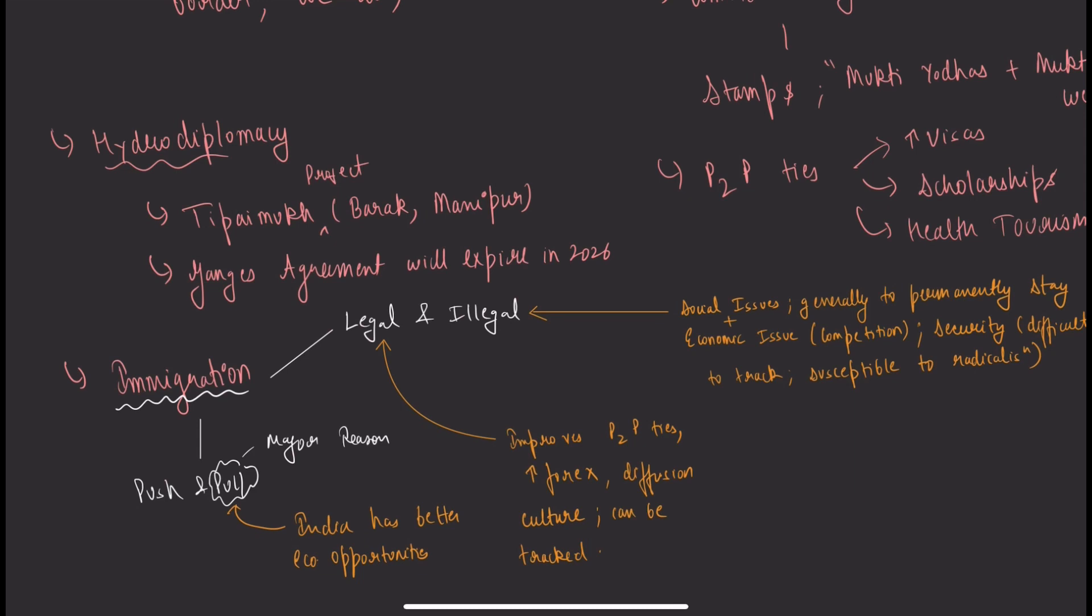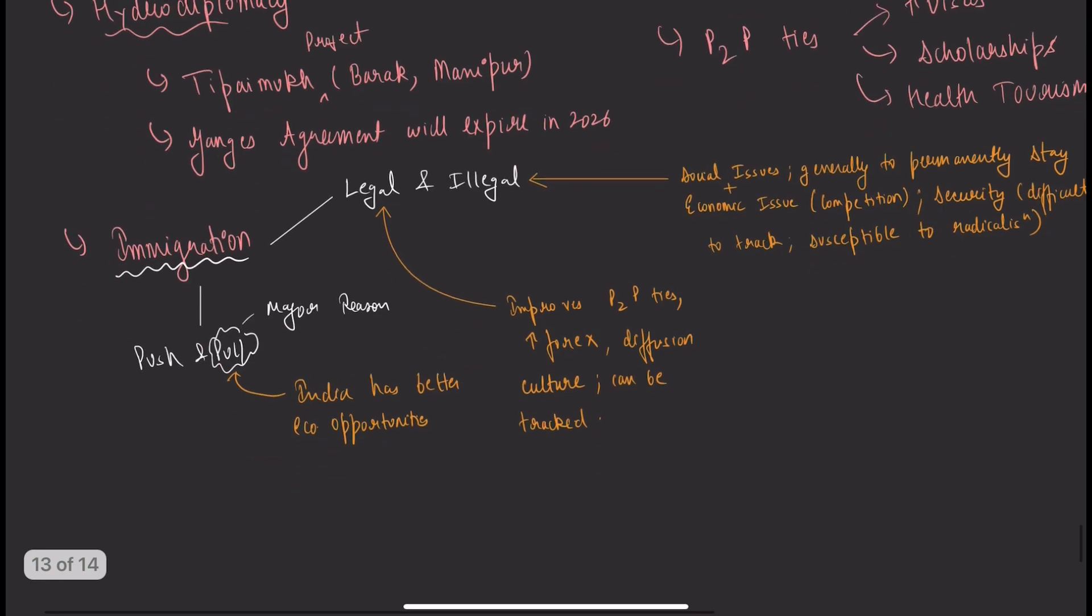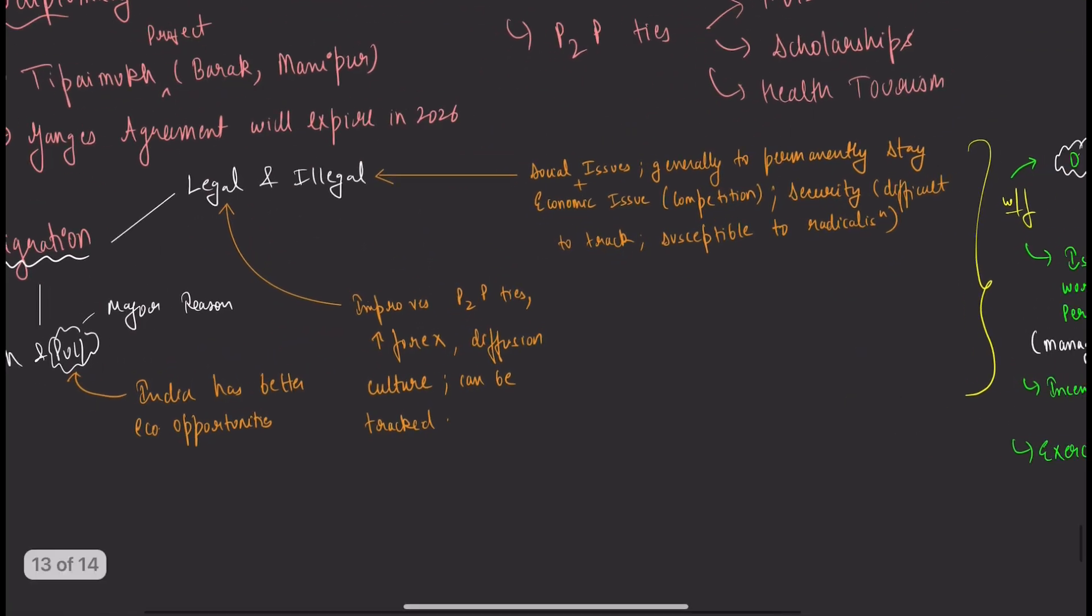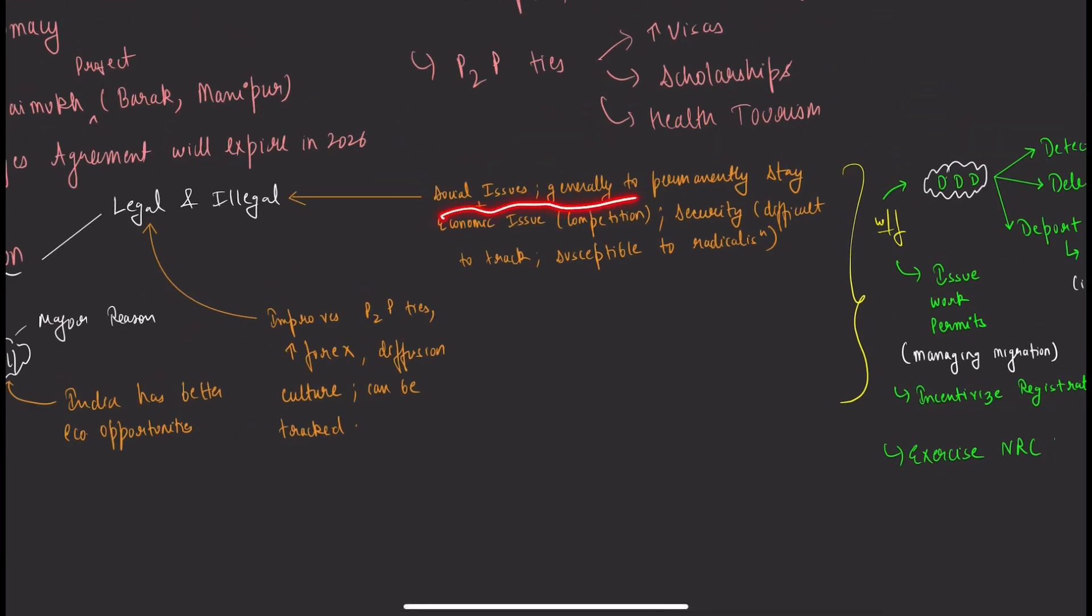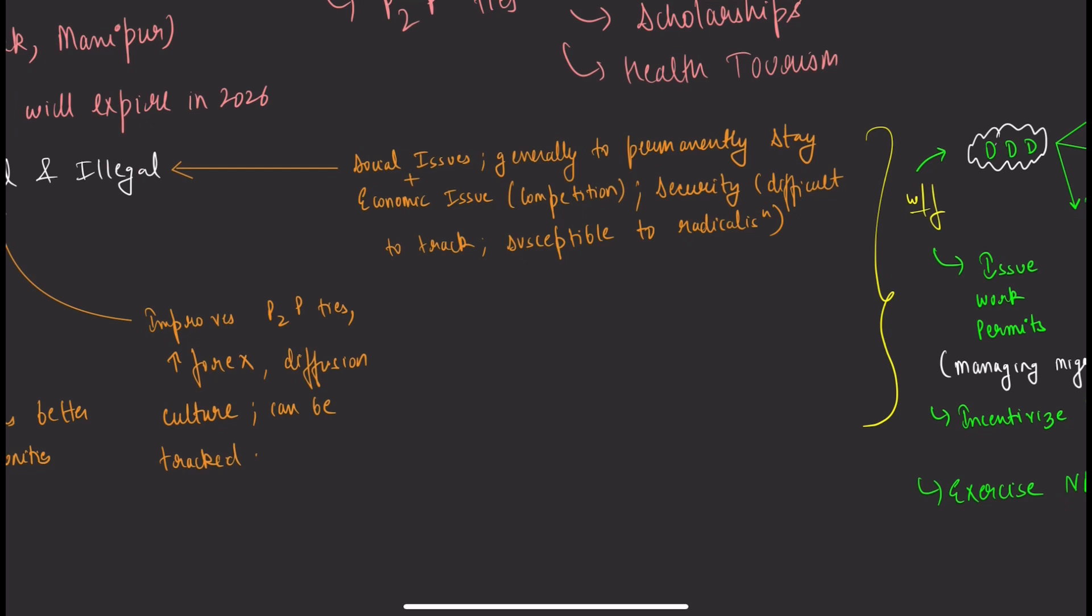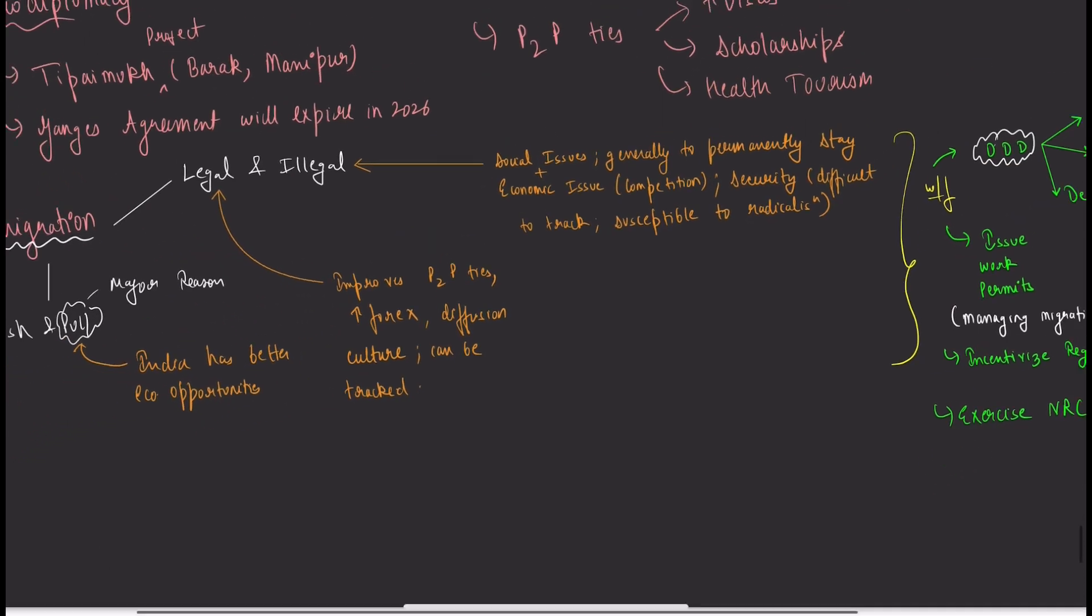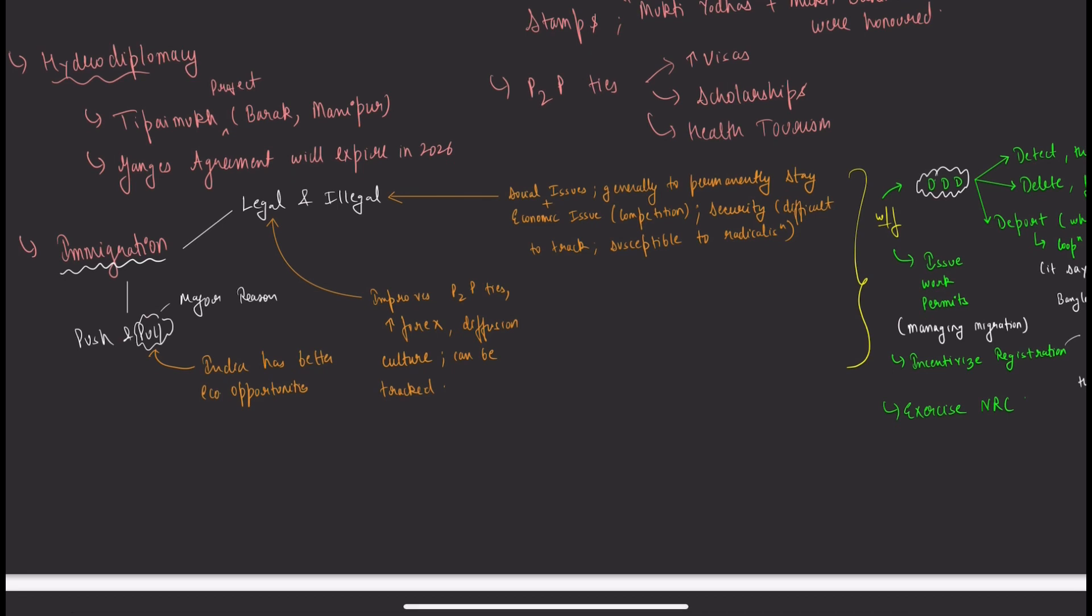The Ganges Agreement expires in 2026—renew it with Bangladesh's new status as developing country. Immigration issues: illegal immigration causes social issues. There's competition for limited resources. Illegal immigrants staying creates security concerns—difficult to track and susceptible to radicalization, causing internal security issues.